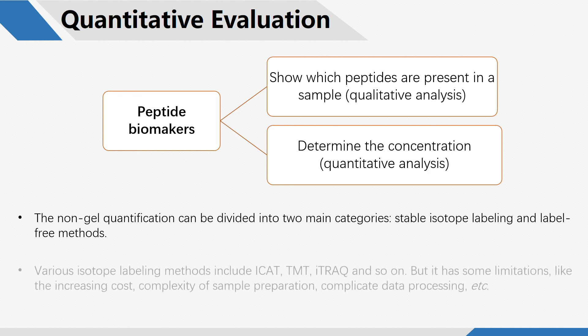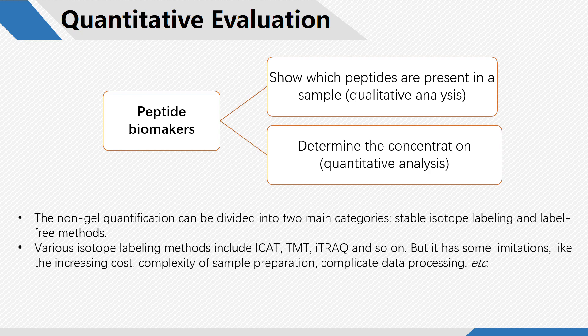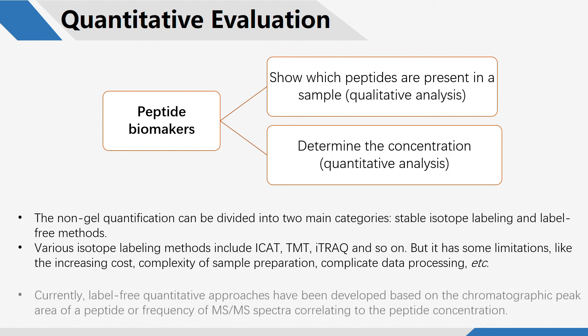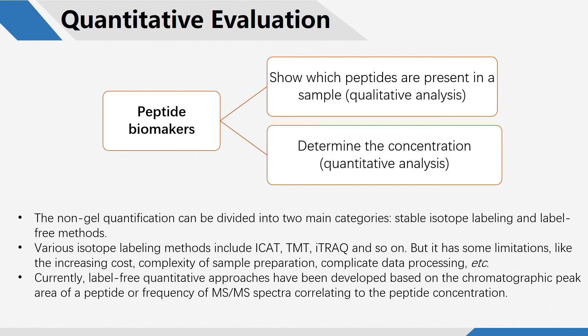Various isotope labeling methods include ICAT, TMT, iTRAQ, and so on. But it has some limitations, like increasing cost, complexity of sample preparation, and complicated data processing. Currently, label-free quantitative approaches have been developed, based on the chromatographic peak area of a peptide or the frequency of mass spectra correlating to the peptide concentration.